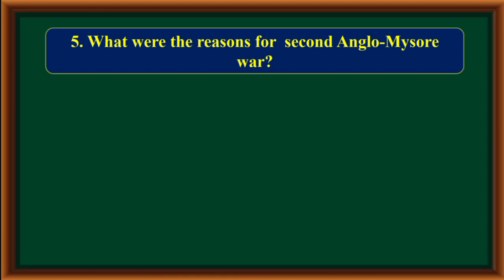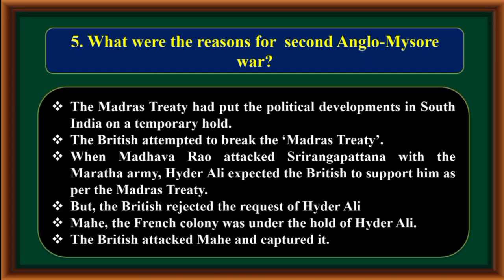What were the reasons for the Second Anglo-Mysore war? The Madras Treaty had put the political developments in South India on a temporary hold. The British attempted to break the Madras Treaty when Madhava Rao attacked Srirangapatna with the Maratha army. Hyderali expected the British to support him as per the Madras Treaty, but the British rejected his request. Mahe, the French colony under the hold of Hyderali, was attacked and captured by the British. These were the reasons for the Second Anglo-Mysore war.